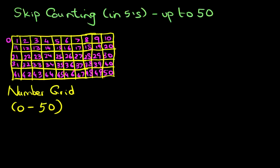So let's have a look at our first example. We've got number 0 and the question is, what number comes after 0 if we are counting in fives?